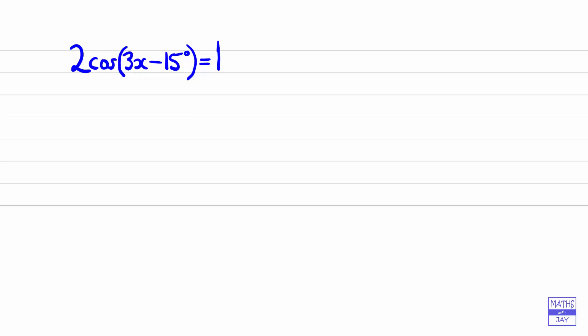So we know that the cosine of 3x minus 15 is going to be equal to a half. So 3x minus 15 must be the angle whose cosine is a half.